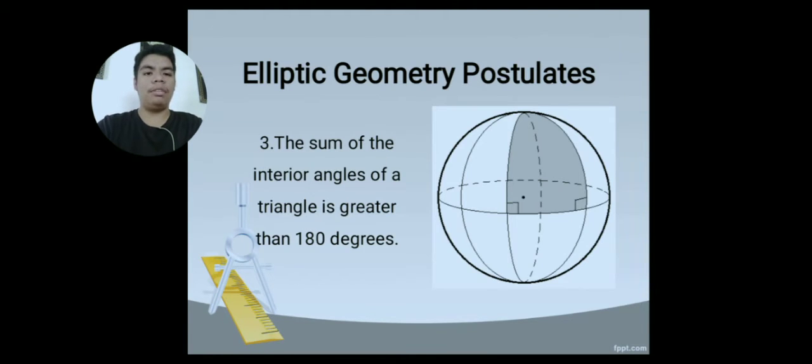The sum of the interior angles of a triangle is greater than 180 degrees. Since the ellipse is composed of curved lines, therefore the side of the triangle in an ellipse is slightly curved. Since it is slightly curved, it will affect the measurement of the triangle. If we look closely at the figure, there are already two right angles. So therefore, if we add that, it will already result to 180 degrees.